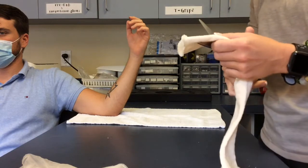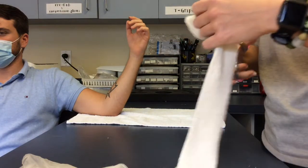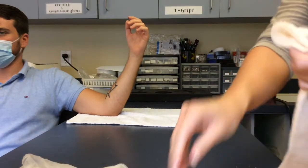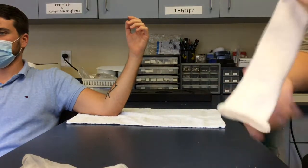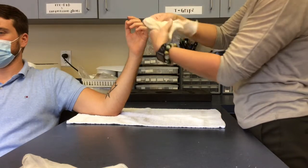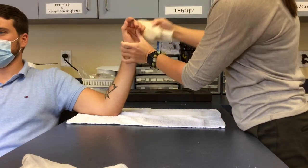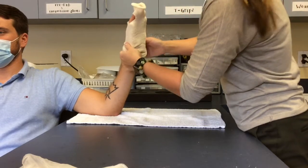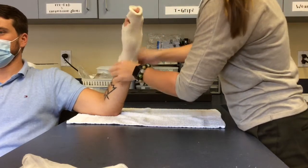First step is to cut the stockinette and place it over your patient's hand and forearm. You want to make sure that they're in a comfortable position depending on how early the injury is. You may need to place them over a ramp.